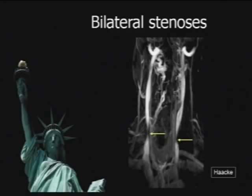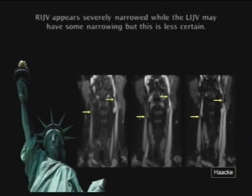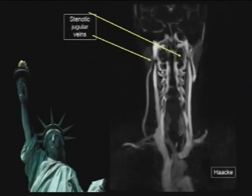I'm concerned that people will start stenting narrowings without really being sure what they represent. These narrowings happen in three distinct locations: where the strap muscles exert pressure on the vein, where the carotid artery indents the jugular vein, and up high at C2. These are very common areas for narrowing, and we have to be cautious before concluding what they represent.